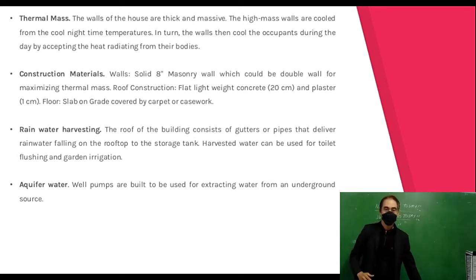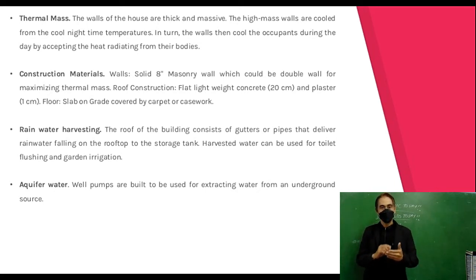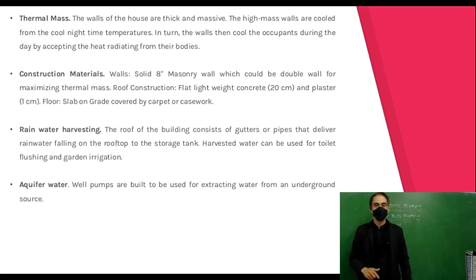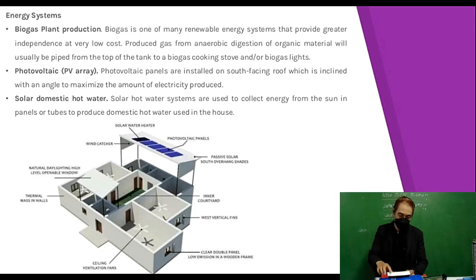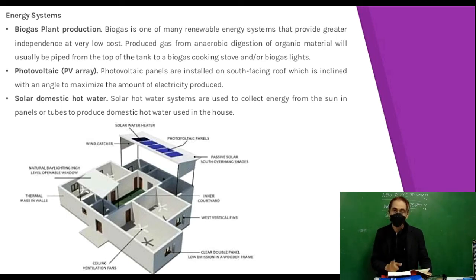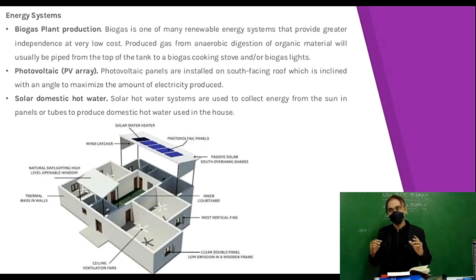Rainwater harvesting: the roof of the green building consists of gutters or pipes that deliver rainwater collected on the rooftop to a storage tank; harvested water can be used for toilet flushing and garden irrigation. Aquifer water well pumps are built for extracting water from underground sources called aquifers. Biogas is one of many renewable energy systems providing greater independence at very low cost; gas produced from anaerobic digestion of organic material is piped from the top of a tank to a biogas cooking stove or biogas lights.